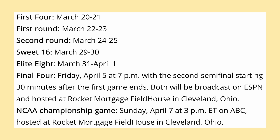The First Four games start on March 20th and 21st. The First Round runs March 22nd through the 23rd. The Second Round is March 24th through the 25th. The Sweet 16 is from March 29th through the 30th. The Elite 8 is March 31st through April 1st. The Final Four is on Friday, April 5th, and the NCAA Championship Game takes place on Sunday, April 7th.